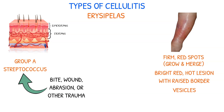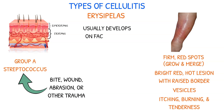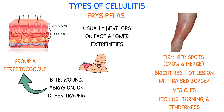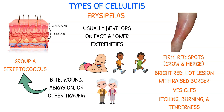Other symptoms of erysipelas may include itching, burning, and tenderness in the affected area. It is most commonly found on the face and lower extremities and is more common in infants, young children, older adults, and the immunocompromised.